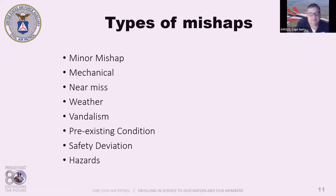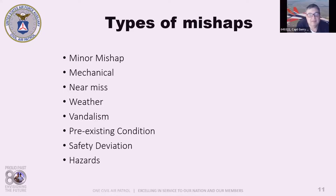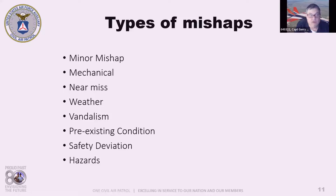A weather mishap is any mishap attributed to unforeseen weather events — for example, hail, high winds, or flooding. Up in the UP, you can experience all four seasons in a two-hour window between noon and 2 PM in May.